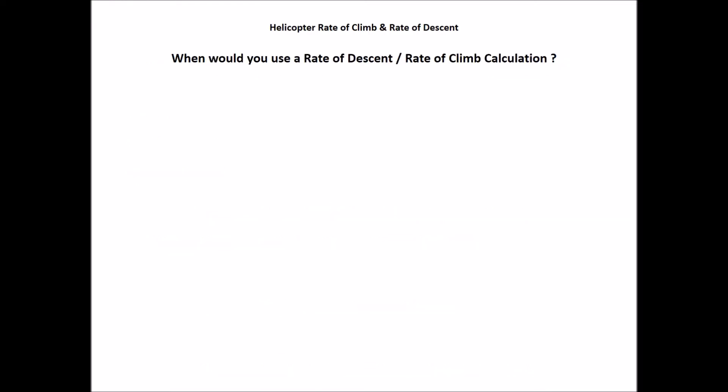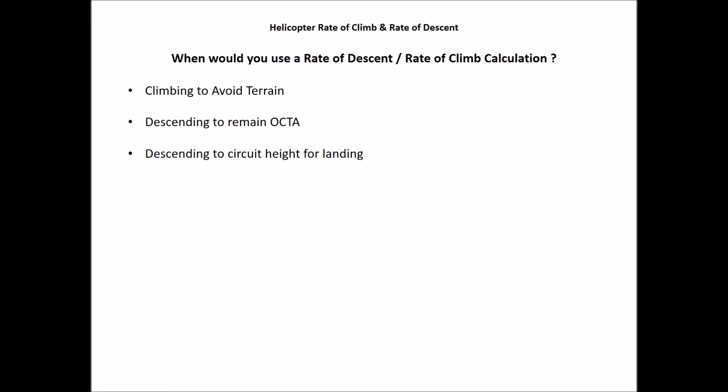So when would you actually use the rate of descent or rate of climb calculation? As a private or commercial pilot, a couple of things come to mind. You might use it when climbing to avoid terrain, when needing to descend to remain outside controlled airspace, or when descending to circuit height for landing. A practical example: I was ferrying a squirrel from Ayers Rock across to the Gold Coast, coming into Charleville for landing, 20 miles out.